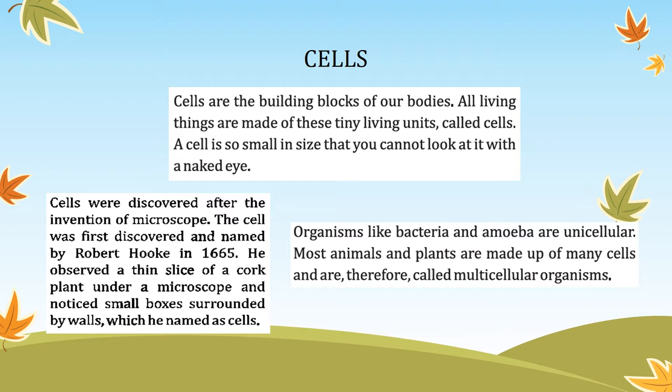These cells are very small in size and we cannot see them with the naked eye. We can only see cells with the help of a microscope. The first cell was discovered by Robert Hooke in 1665. He observed a very thin slice of a cork plant under the microscope and found that the slice is made up of very small boxes, which he named cells because they are the building unit of that cork plant.